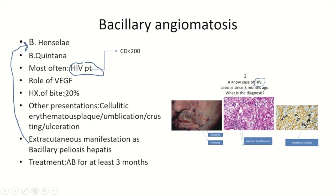In comparison with cat scratch disease, which is also caused by Bartonella, a history of bite is only found in 20% of patients with bacillary angiomatosis. Other cutaneous findings, rather than papules and nodules, include cellulitic erythematous plaques, implication, crusting, and ulceration. Bacillary angiomatosis can also involve organs other than the skin.